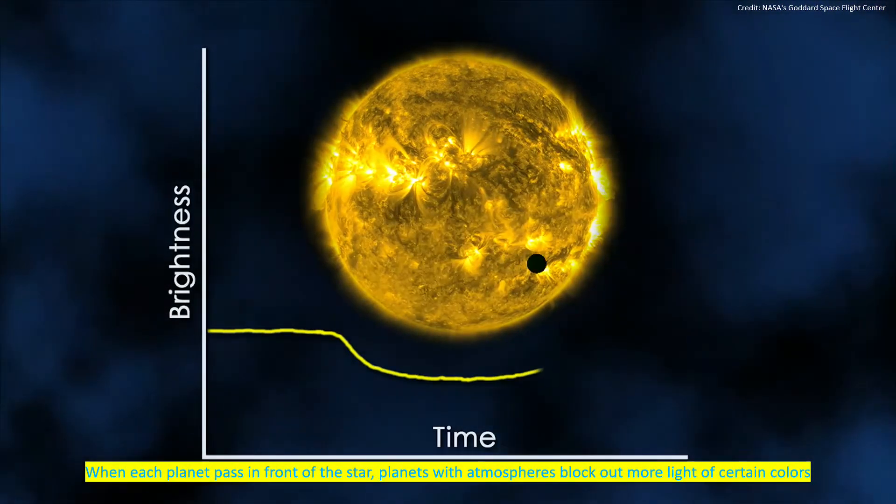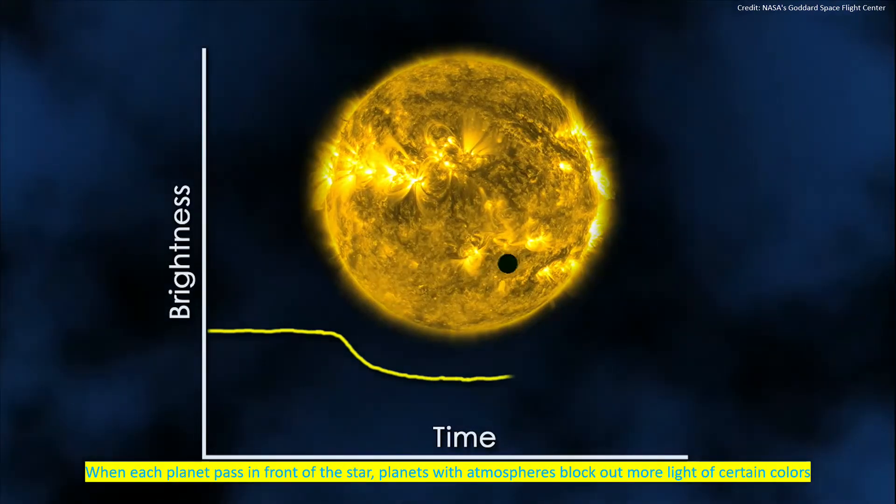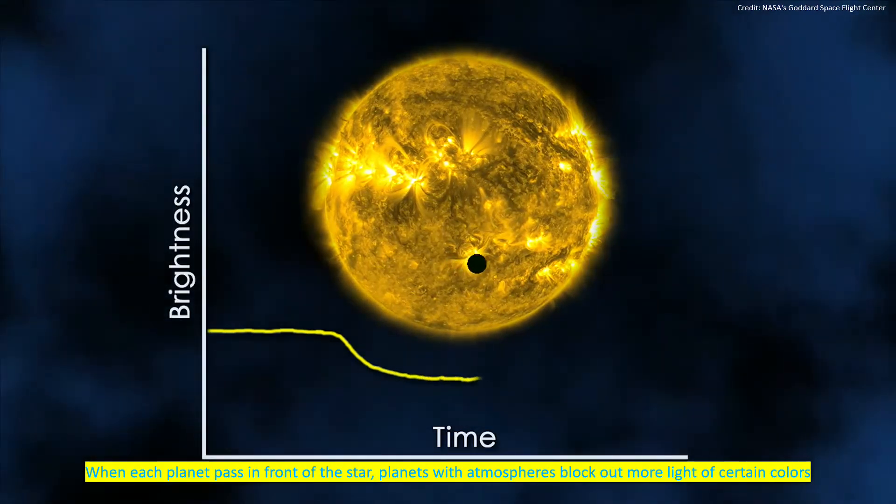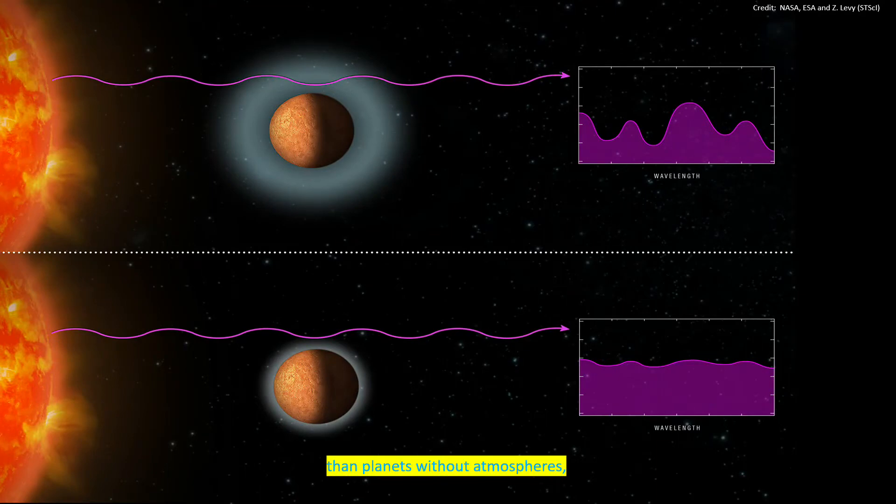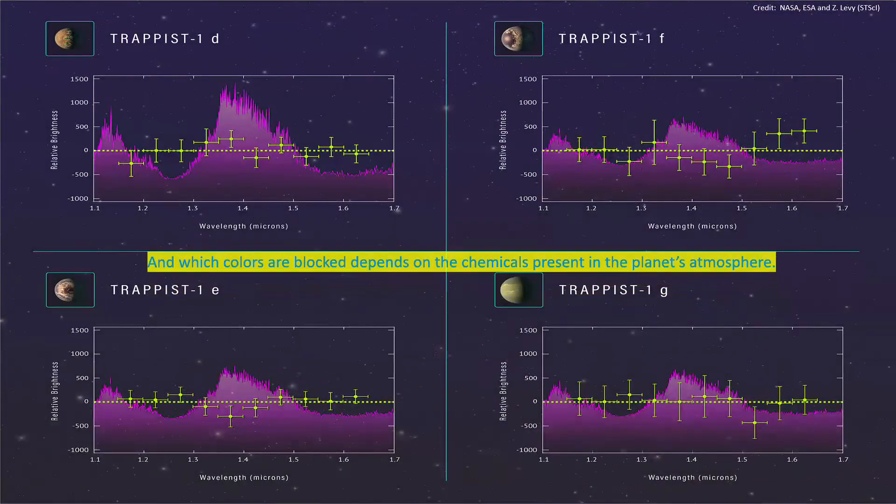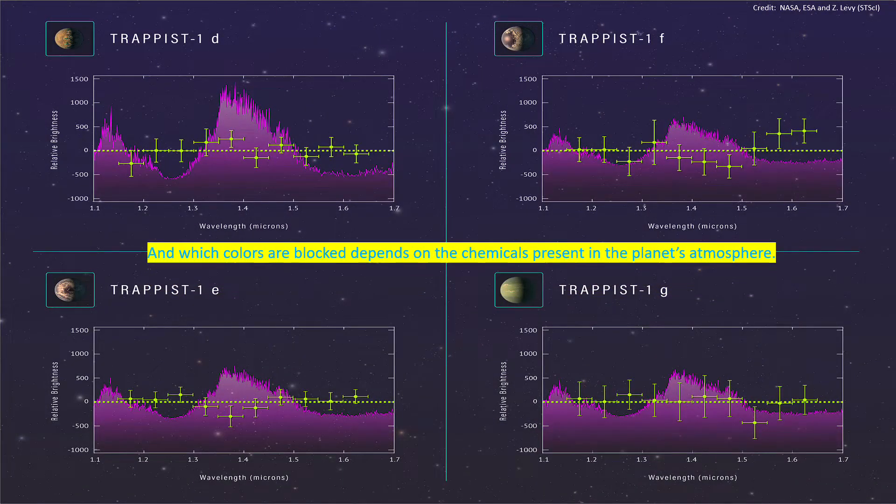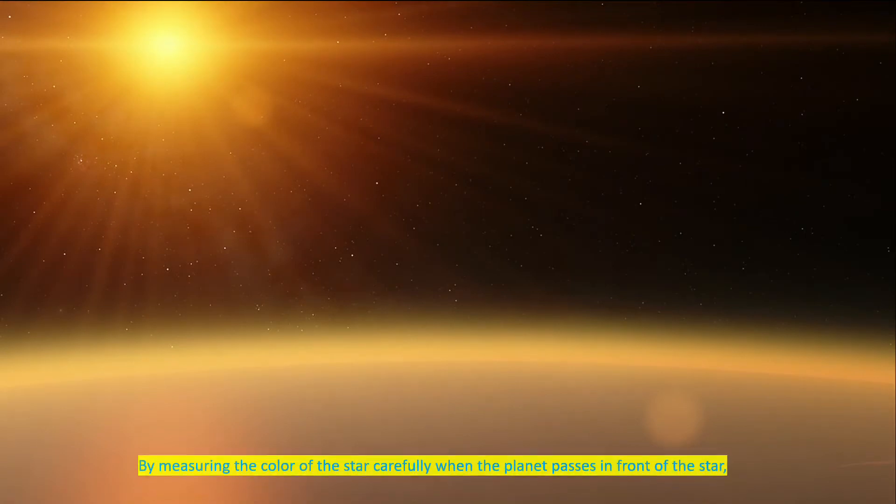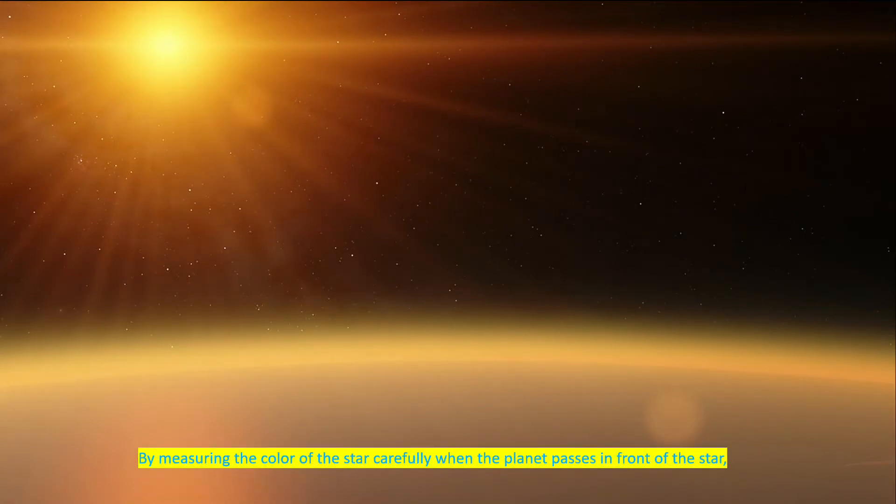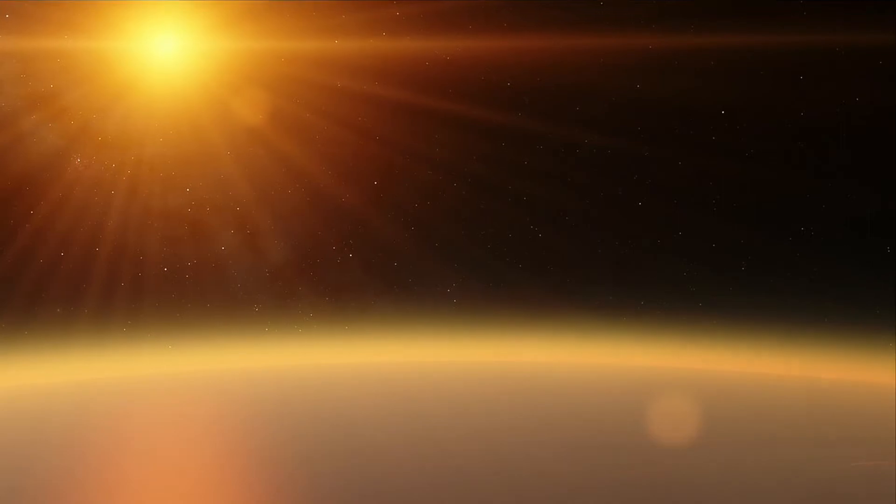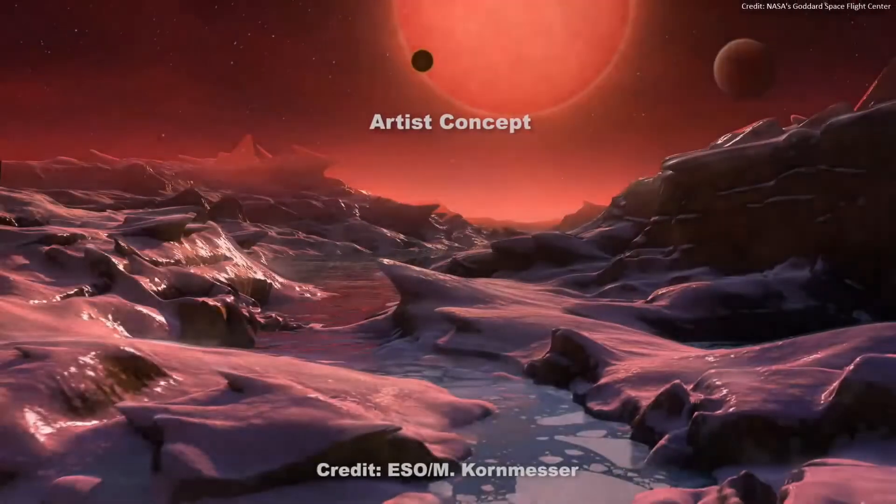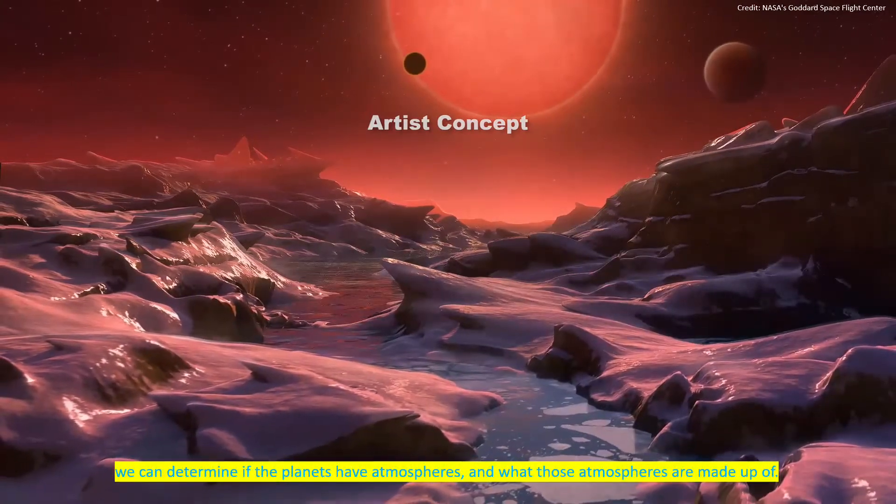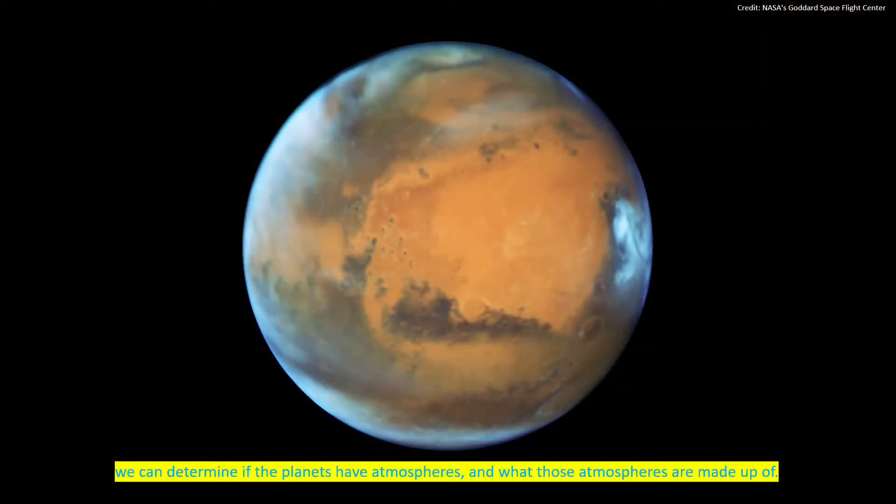When each planet passes in front of the star, planets with atmospheres block out more light of certain colors than planets without atmospheres. Which colors are blocked depends on the chemicals present in the planet's atmosphere. By measuring the color of the star carefully when the planet passes in front of the star, we can determine if the planets have atmospheres and what those atmospheres are made of.